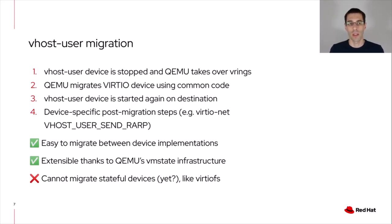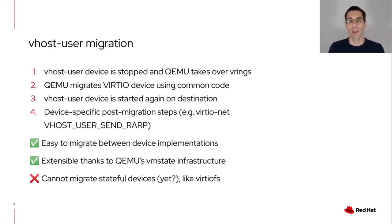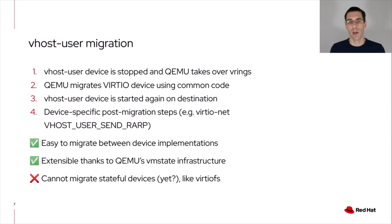Let's start by looking at how this works today for vhost-user. Vhost-user migration takes an approach where QEMU actually stops the vhost-user device on the source before migrating. Then QEMU takes over the v-ring and takes over the state of the device, and uses QEMU's common virtio migration code in order to migrate to the destination. Once QEMU has loaded the device's state on the destination side, it restarts vhost-user. This means vhost-user is not directly involved in the migration, it doesn't control the migration, and it does not get to define its own device state. There are also additional steps done after or before migration depending on the device type — for virtio-net, there's a special vhost-user protocol message to send a gratuitous ARP packet that announces the network interface after migration.